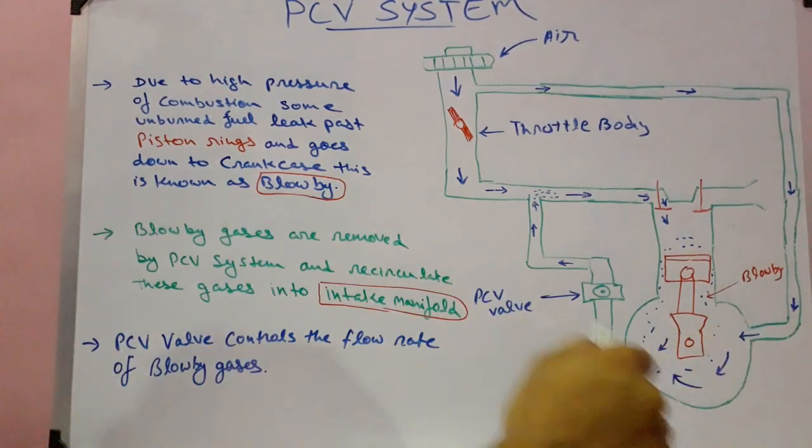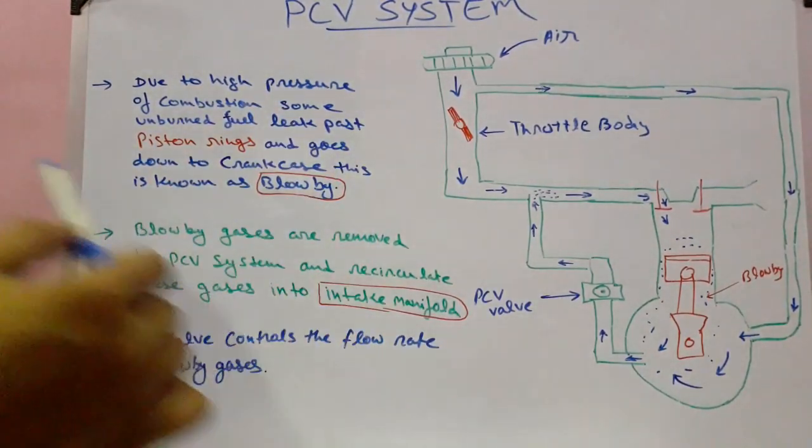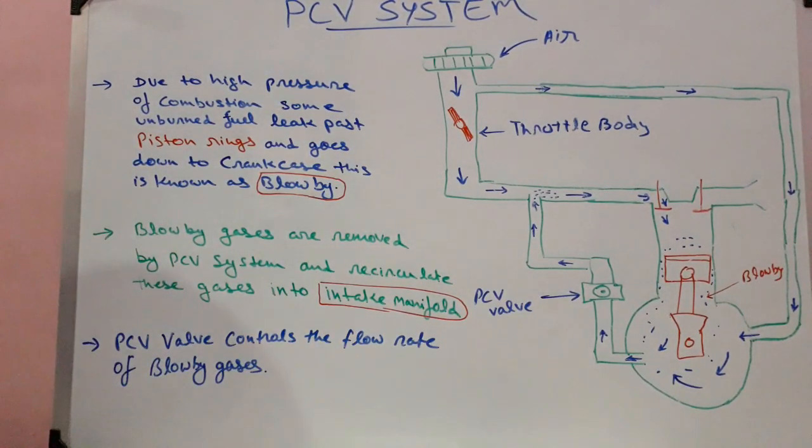And if the blow-by is not removed it will condense inside the crankcase. Not only that, it may react with engine oil to form sludge. This newly formed sludge will definitely corrode the engine components like piston rings and bearings and valves.